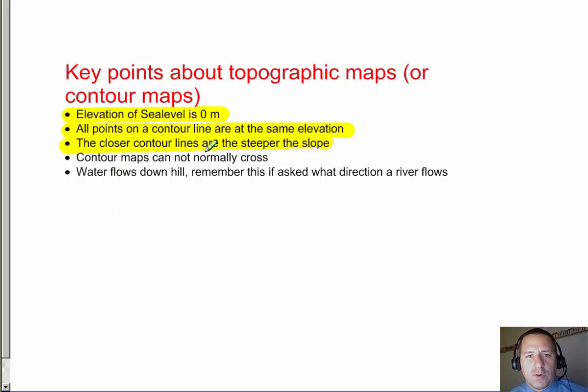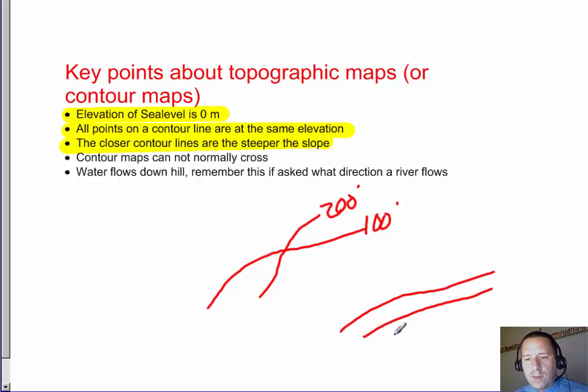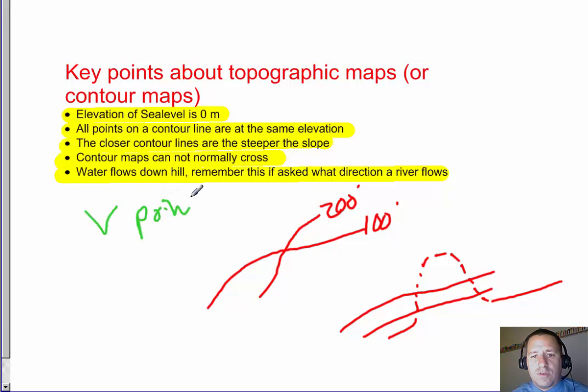Contour maps cannot normally cross. So you're never going to see this is 100 feet, this is 200 feet. That wouldn't make any sense. There would be no instance that a point could be at both 100 and 200 feet. Now you may be saying, well what if there's an overhang, kind of like in the Lion King or all the Roadrunner cartoons. Those would be drawn a little differently. If you had an overhang, it would be drawn with a dotted line to show you that it was different. Okay, so they normally don't cross. In any example that you're going to be given in my class, they wouldn't be crossing. And finally, water flows downhill. It seems like an obvious thing that we all know. But remember, when asked what direction a river flows, you need to remember that it flows downhill. And that the V points towards the source. V points towards the source of the river.